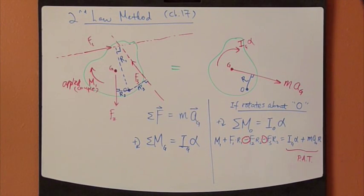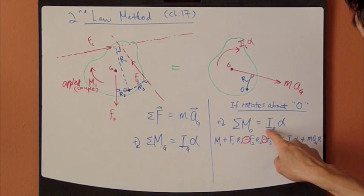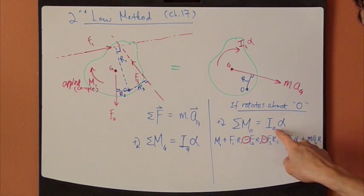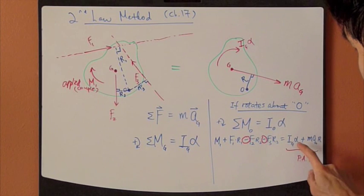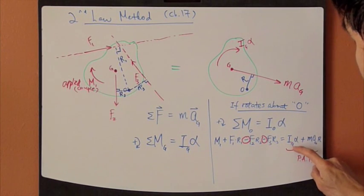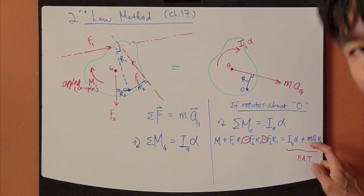The advantage of using these two terms instead of this itself is that moment of inertia about point O might not be readily available. But I_G, moment of inertia about center of gravity, may be available for common shapes in the back of the book.